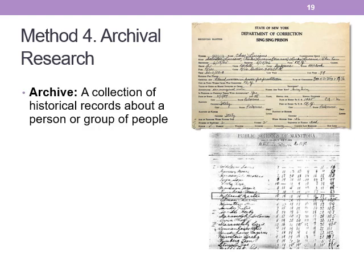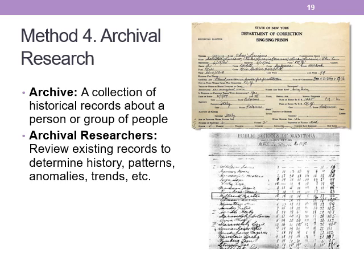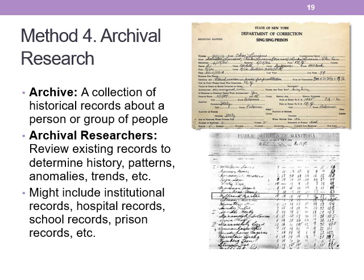Method four is archival research. An archive is a collection of historical records about a person or group of people — old immigration records, prison records, tax records, or health records. Archival researchers review these records to look at history, patterns, anomalies, and trends. These could be qualitative, looking at old diaries, or quantitative, looking at data from twin studies. So that's the fourth type of descriptive research, and all of the methods I've described are descriptive.